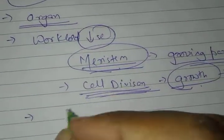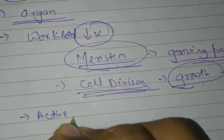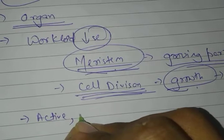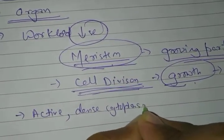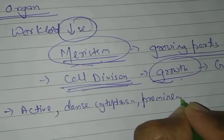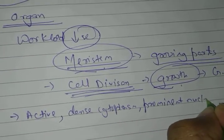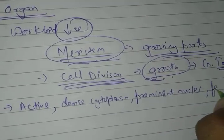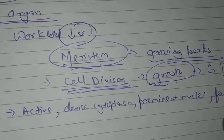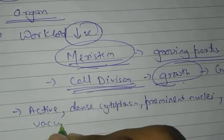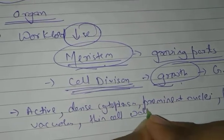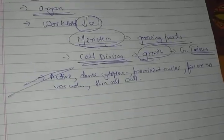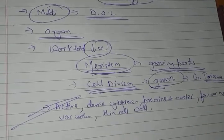These cells have some characteristics. The cells of meristematic tissue are active. They have dense cytoplasm. They have prominent nuclei. They might have few or no vacuoles. And they have a thin cell wall. You need to remember this. The cells of meristematic tissues have these properties.